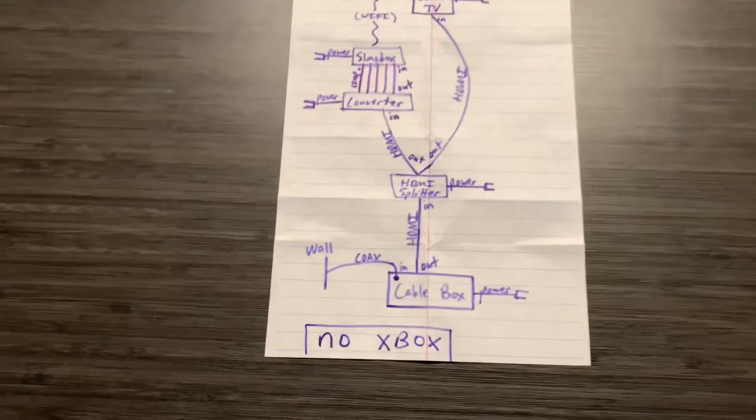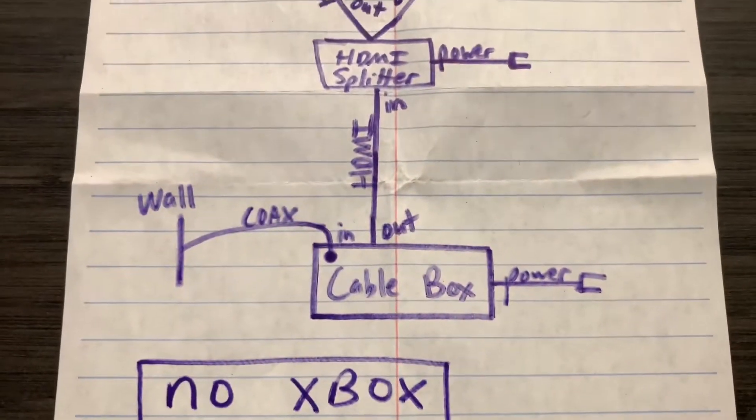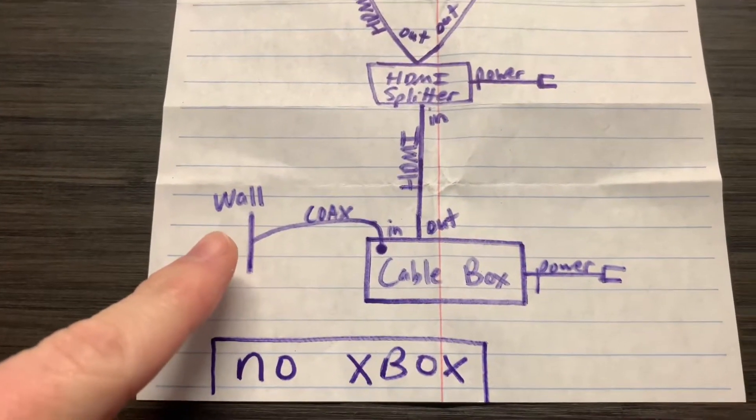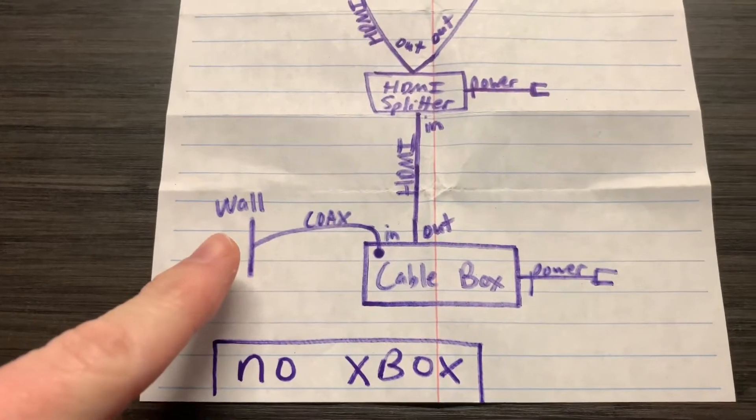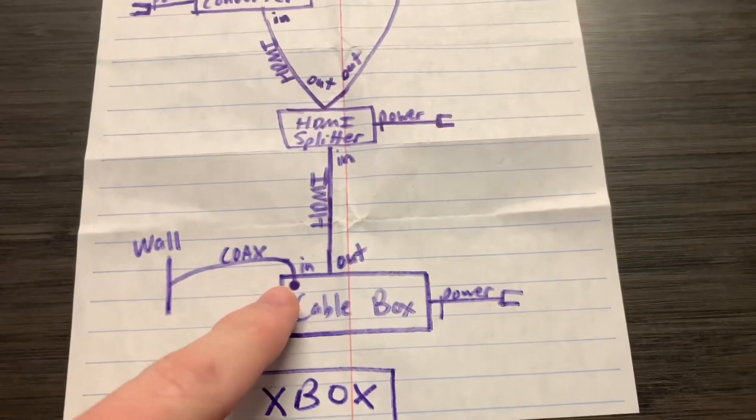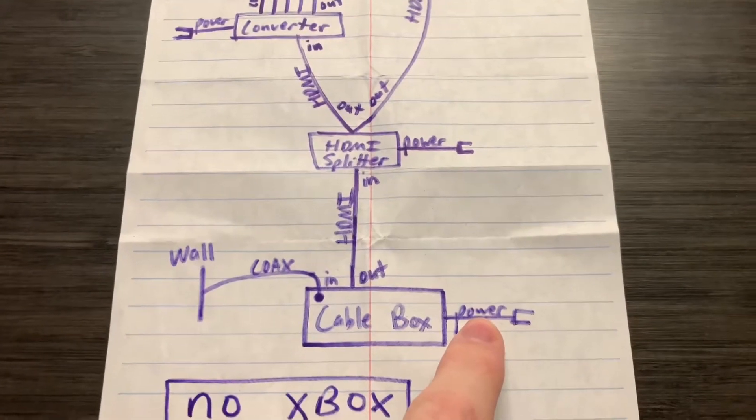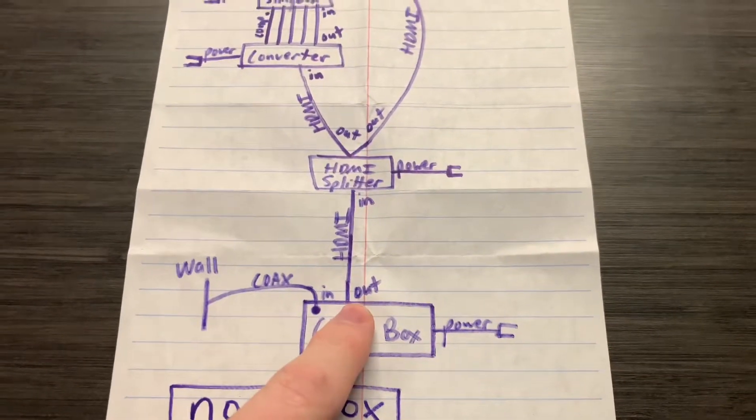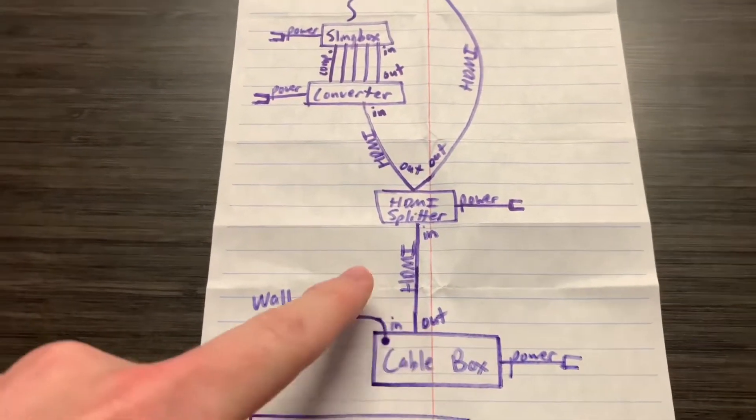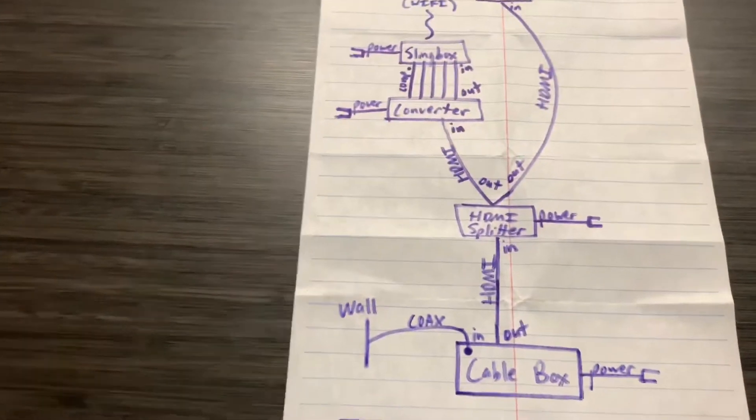So this is how you do it without an Xbox. You have your cable box and you have the wall over here which has the connector for the coax cable. So you're going to plug your coax cable into the wall and then your coax cable is going to go to the in port on the cable box and that cable box is going to be plugged into the power and it's going to have an out HDMI. So you want to have an HDMI cable that goes out of your cable box into the HDMI splitter so that you can get two signals coming out of the HDMI splitter.